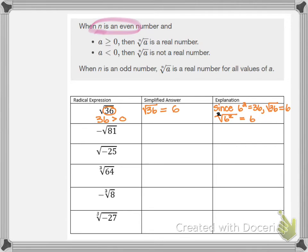Notice the index is 2. Normally we don't write the 2 for a square root, but you have to know the index is 2, and that 2 matches the power of the radicand. So if the index matches the power of your radicand, your answer will just be 6.